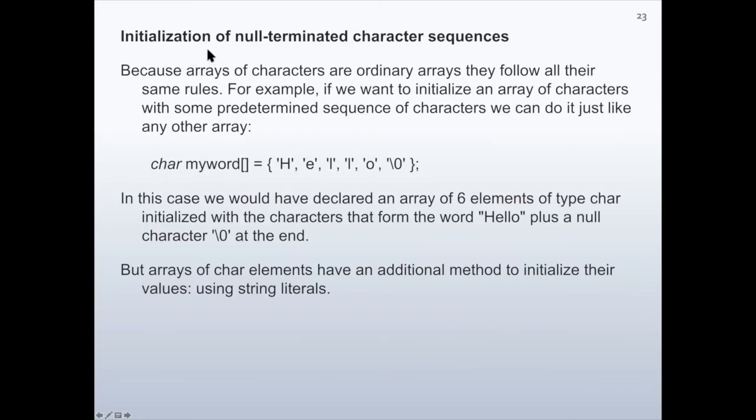Now we are going to consider initialization of null-terminated character sequences. Because arrays of characters are ordinary arrays, they follow all their same rules. For example, if we want to initialize an array of characters with some predetermined sequence of characters, we can do it just like any other array. Here we have myword, which is an array of characters. Then it is initialized to h-e-l-l-o and then a null character. In this case, we would have declared an array of six elements of type character initialized with the characters that form the word 'hello', plus a null character backslash zero at the end.